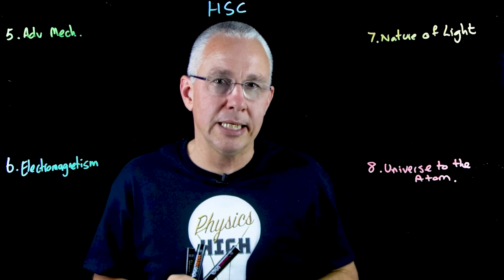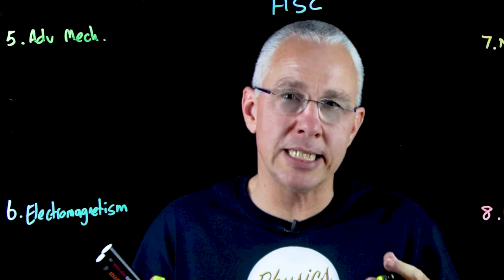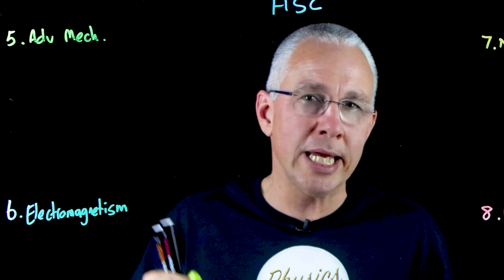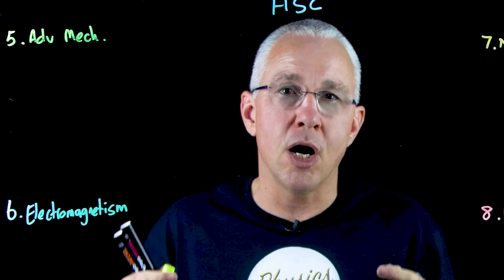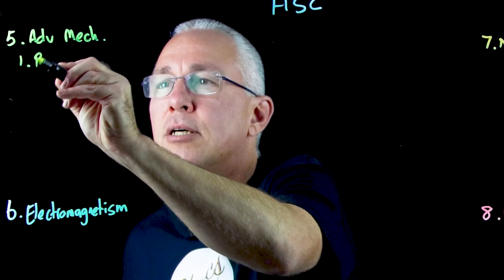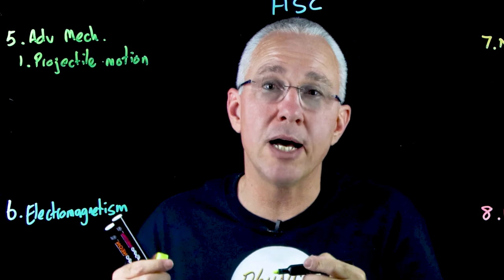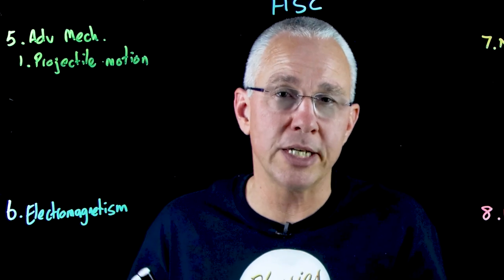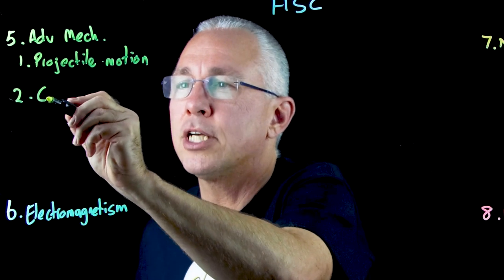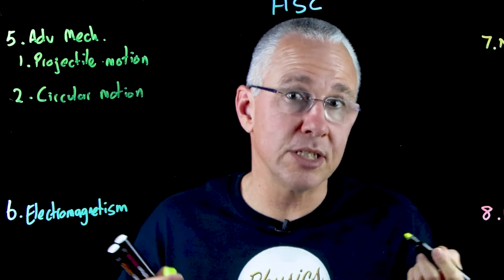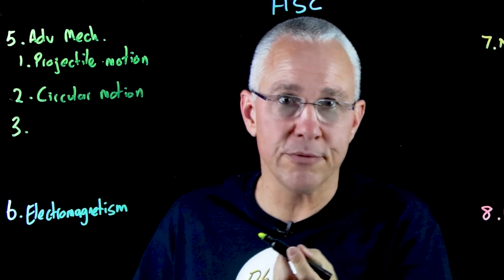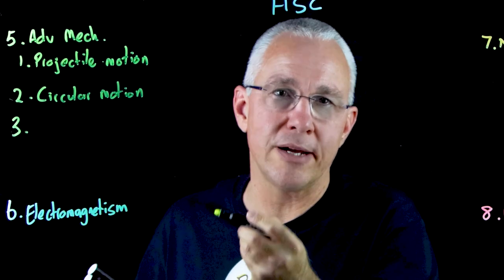Advanced Mechanics is really an extension of the concepts of kinematics and dynamics that you learned in year 11, looking particularly at two-dimensional examples. It's divided up into three inquiry questions: the first is projectile motion, where you have constant acceleration in one direction and constant velocity at 90 degrees to that motion. The second is circular motion, where you look at objects traveling in a circle experiencing centripetal forces. The third is an extension of circular motion, looking at motion within gravitational fields.